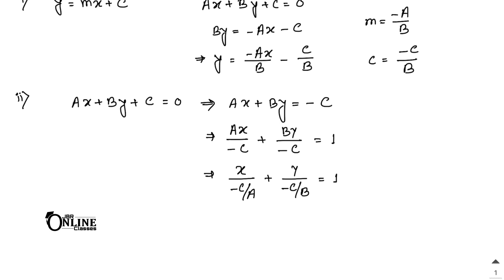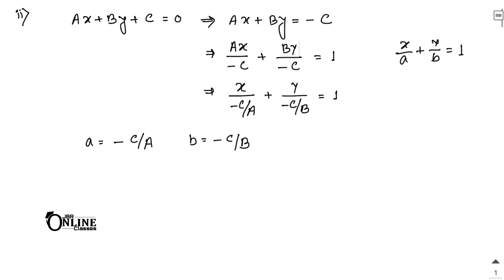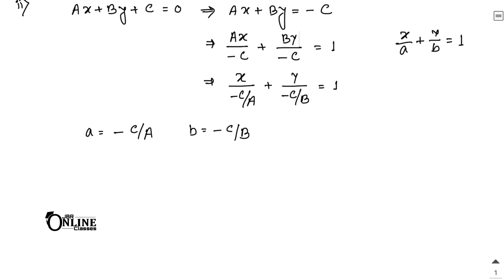This gives x/(-c/a) + y/(-c/b) = 1, which is the required intercept form (x/a + y/b = 1). Here the x-intercept equals minus the constant term divided by the coefficient of x, and the y-intercept equals minus the constant term divided by the coefficient of y.